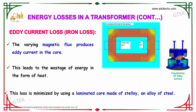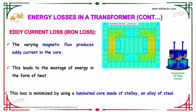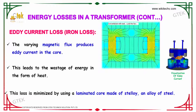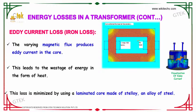The other loss is due to the eddy current loss, or iron loss. The varying magnetic flux produces eddy currents in the core, which leads to the wastage of energy in the form of heat. This loss is minimized by using a laminated core made of stalloy, an alloy of steel.